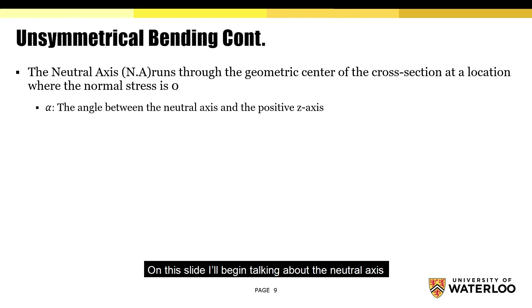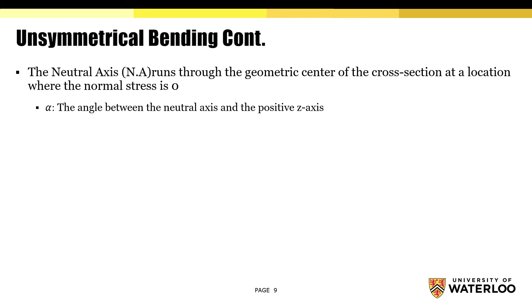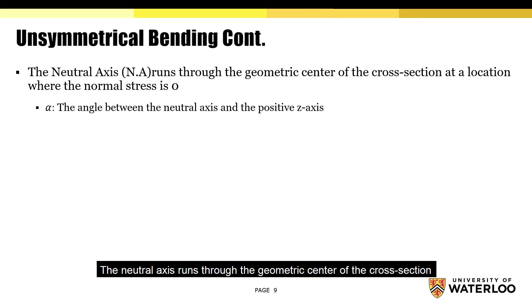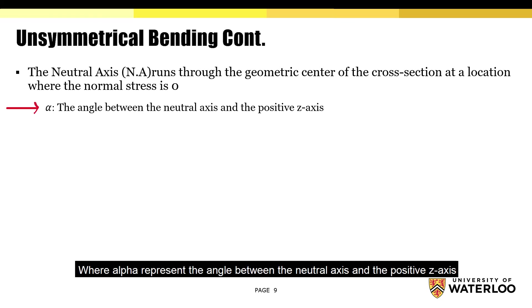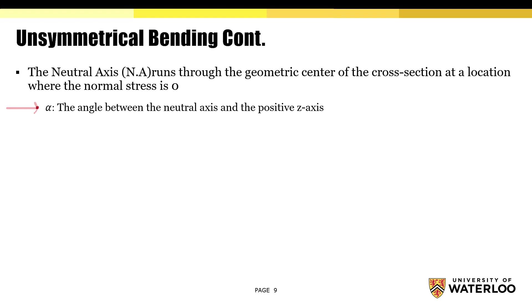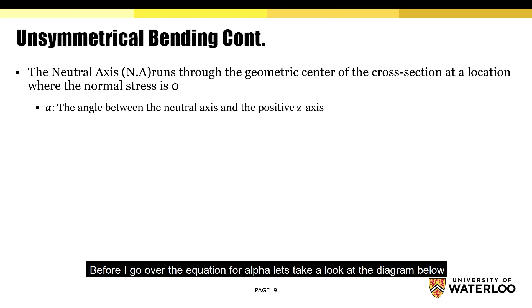On this slide, I'll begin talking about the neutral axis. As we may already know, the neutral axis runs through the geometric center of the cross section at a location where the normal stress is equal to zero. But the issue is, we don't really know its orientation. In order to figure out the orientation, we'll need to know what alpha is, where alpha represents the angle between the neutral axis and the positive z axis. Before I go over the equation for alpha, let's take a look at the diagram below.